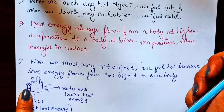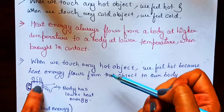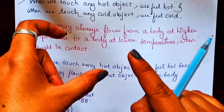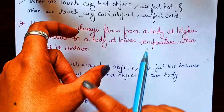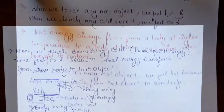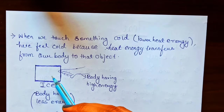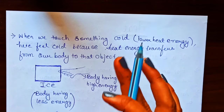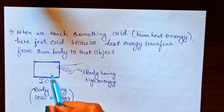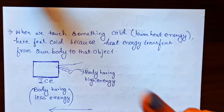When we touch any hot object, we feel hot or warm. When we touch any cold object like ice, we feel cold. Let's compare our body and ice: our body has more heat energy, and ice has very low heat energy. So when we touch ice, heat flows from our body to the ice, and that's why it feels cold.